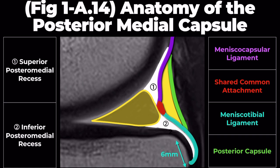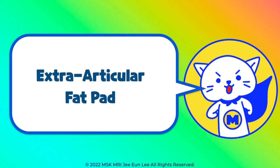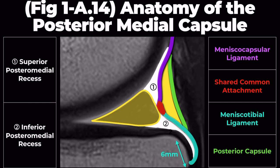In my opinion, while anatomically it doesn't attach to the superior margin, the meniscocapsular ligament often appears to attach to the superior margin on MRI scans. The meniscotibial ligament doesn't attach directly to the articular cartilage margin of the posterior medial tibial plateau but 6 mm below. A thin fat pad normally separates the green-colored joint capsule from the meniscotibial and meniscocapsular ligaments.